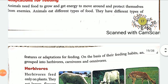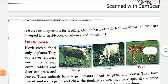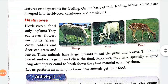Animals eat different types of food and have different features to adjust to their feeding adaptation. They have different types of feeding habits: herbivores, carnivores, and omnivores. Herbivores are those animals which eat only plants and plant products. Carnivores are those animals which eat the flesh of other animals. Omnivores are those which eat both plant and animal products.